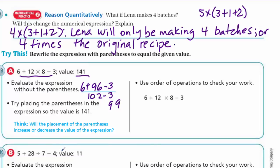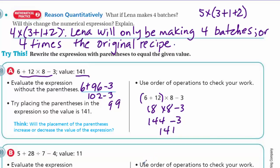Try placing the parentheses so the value is 141. Will placement increase or decrease the value? It will increase it. If we put parentheses around 6 plus 12, that's 18 times 8 minus 3. 18 times 8 is 144, minus 3 is 141. Yes! So placing parentheses around (6 plus 12) did increase the value, and we proved it using order of operations to check our work.